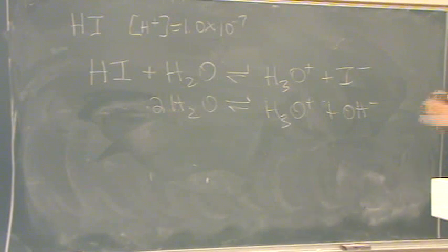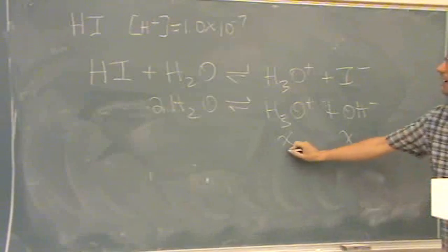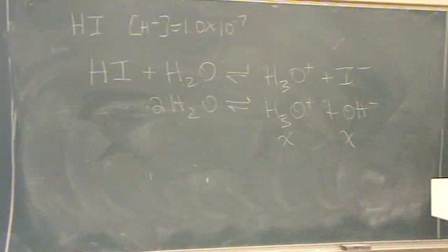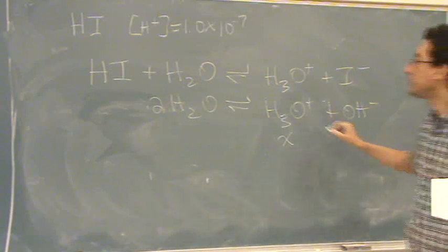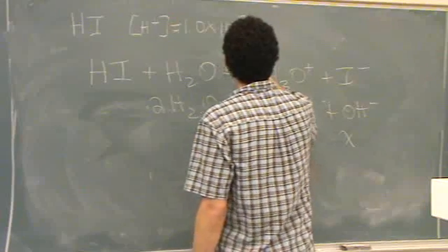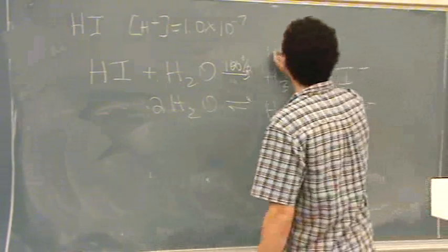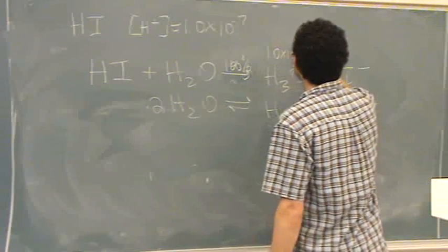Alright. So what you want to do is you say, well, I don't know how much of each of these I'm going to have. I do know about this, because this really is going to go 100% to the right. Okay? So it's going to go 100% to the right. So this is 1.0 times 10 to the minus 7.